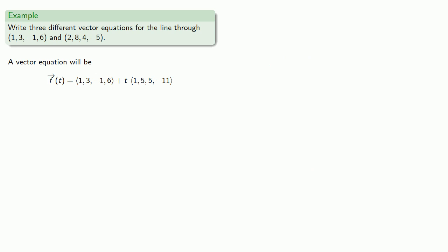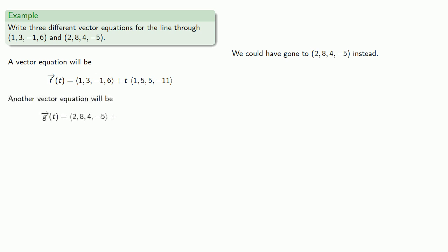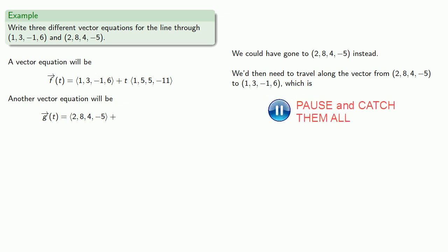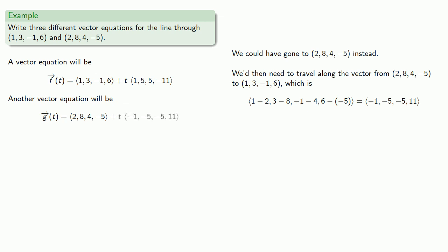How can we get a different vector equation of the line? We could go to a different starting point. This time we could go to the point (2, 8, 4, -5), so the vector (2, 8, 4, -5) takes us to a point on the line. Then we'd travel along the vector from (2, 8, 4, -5) to (1, 3, -1, 6), and going any scalar multiple of that vector takes us to a different point on the line.